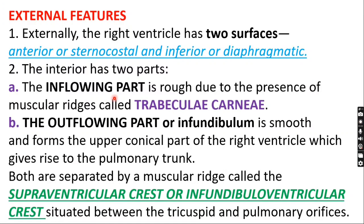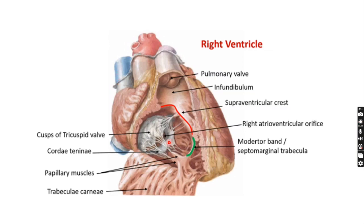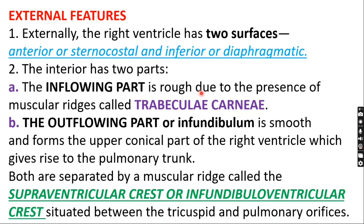The inflowing part is where blood enters from the right atrium into the chamber. The outflowing part is where blood exits — otherwise known as the infundibulum. Inflowing part is rough, and the outflowing part is smooth.